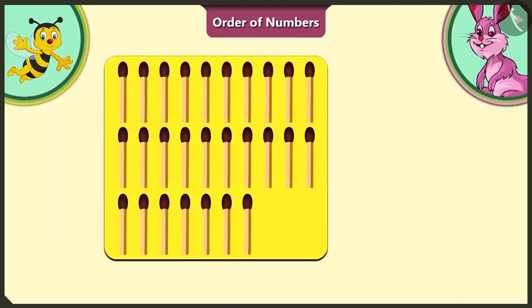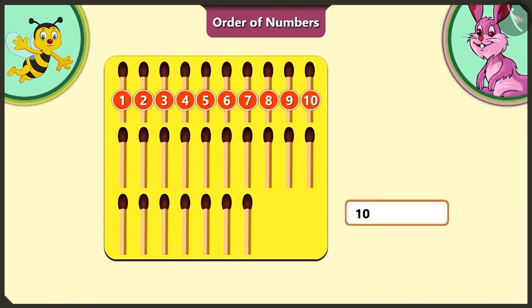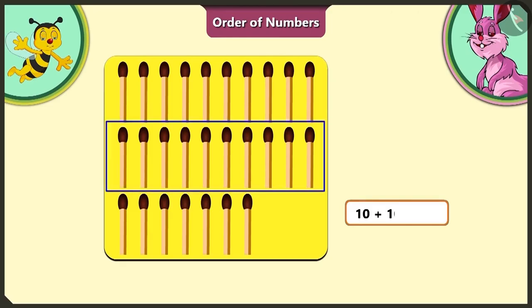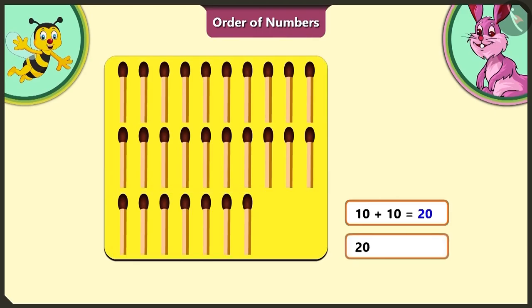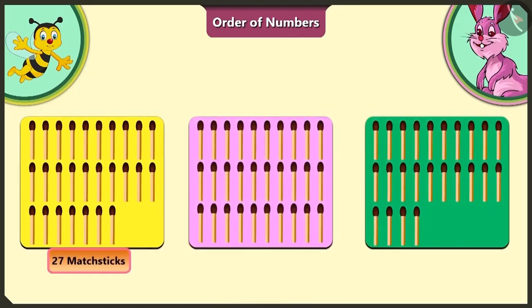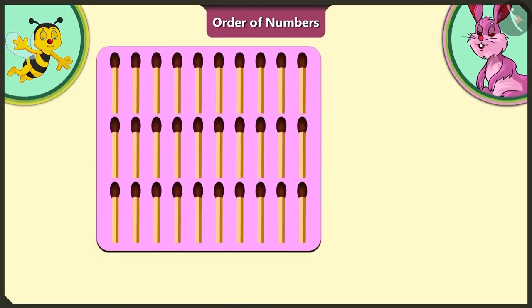Let's see the first group of matchsticks on the yellow card. There are 1, 2, 3, 4, 5, 6, 7, 8, 9, 10 matchsticks. To this first group we add the next group, making a total of 20 matchsticks, and adding the remaining 7 matchsticks gives us a total of 27 matchsticks.